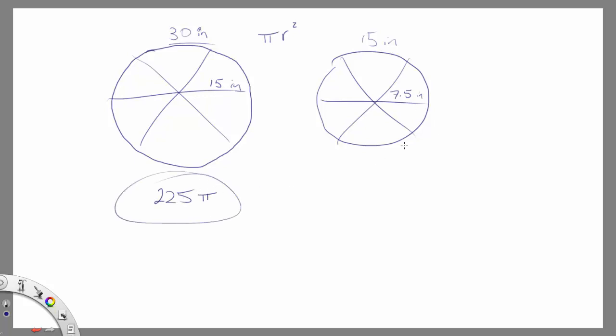And then the other pizza, what is 7.5 squared? I'll just do that real fast. 7.5 times 7.5 is 56.25. So the area of this pizza would only be 56.25 pi.